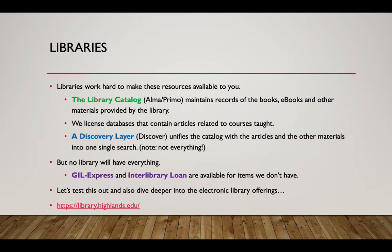A couple of main things before we start looking at the library website. The library catalog — does anyone remember those big card catalog things? The big yellow wood cabinet with all those cards in slots? Libraries have digitized the card catalog, basically the index of all the things we have, and that's online on the website. If you look in the card catalog — what we call Alma or Primo — you're going to see all the books we have, all the ebooks we have, and the material we've licensed through different vendors.